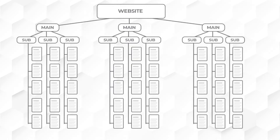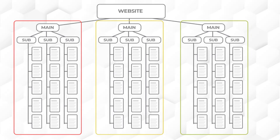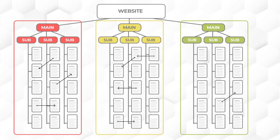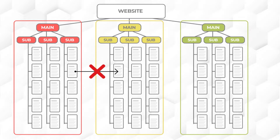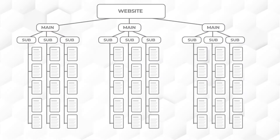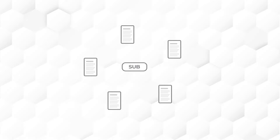Just to give you an overview — when you are starting a new website, you should try to adopt the silo structure. A silo structure simply means segregating your content into different categories and subcategories, and you add internal links to the content within the same category. However, you rarely add internal links to content of other categories. That's the basic of a silo structure.